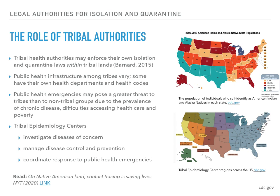Tribes also have police power authority to take actions that promote the health, safety, and welfare of their own tribal members. Tribal health authorities may enforce their own isolation and quarantine laws within tribal lands. Barnard 2015 notes that a shifting and complex body of law controls jurisdiction on Indian lands. This jurisdictional uncertainty is compounded in some states by a rocky history of state-tribal relations and by geography, as tribal lands may be fragmented and checkerboarded with non-Indian lands, or may even straddle the border between two or more states.